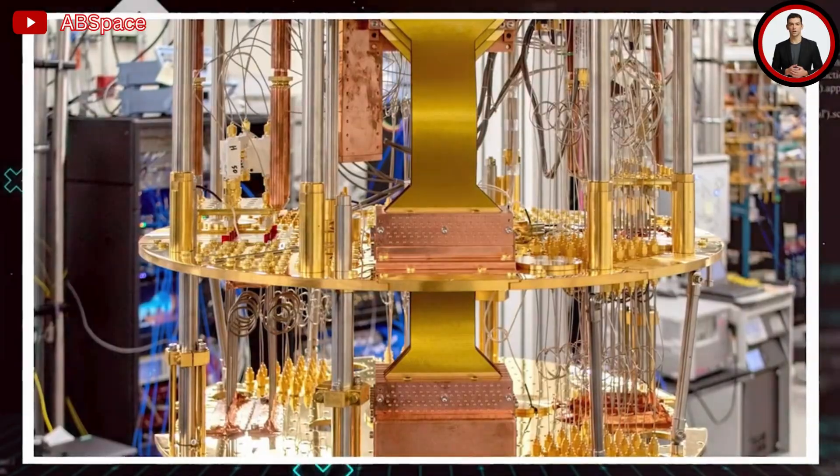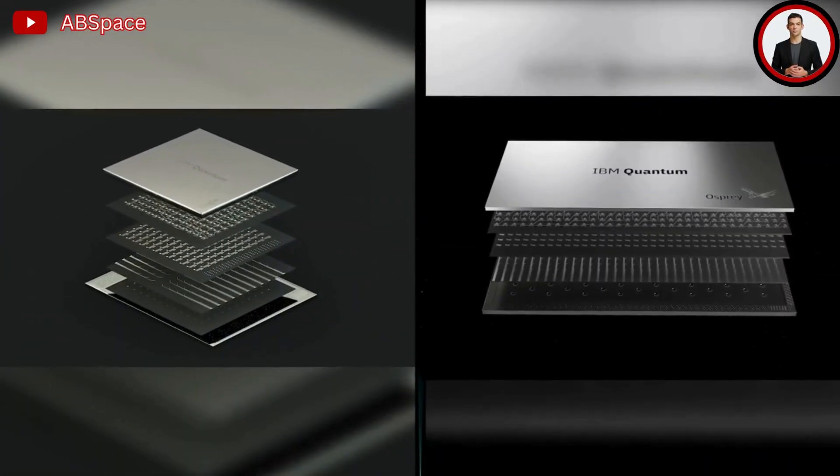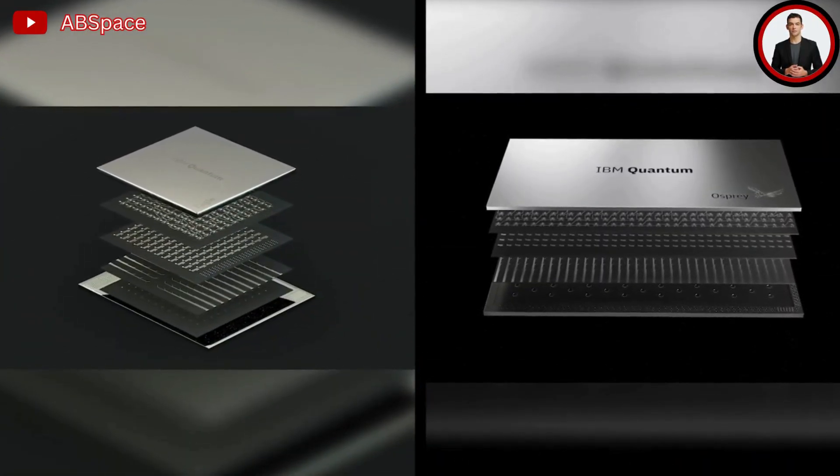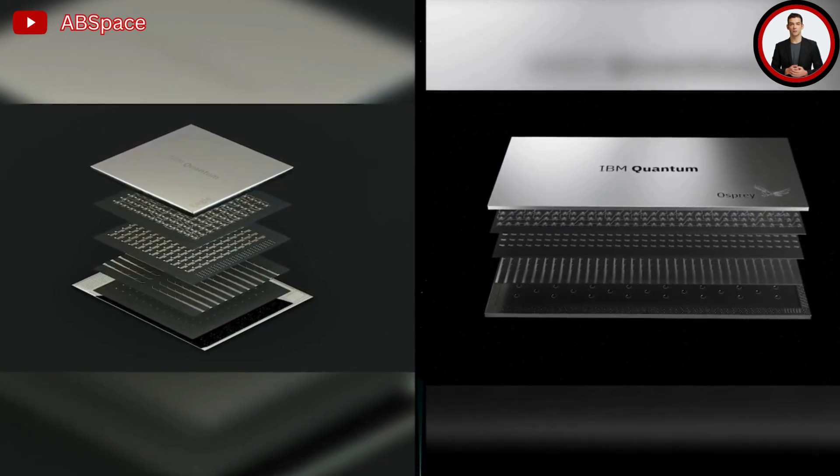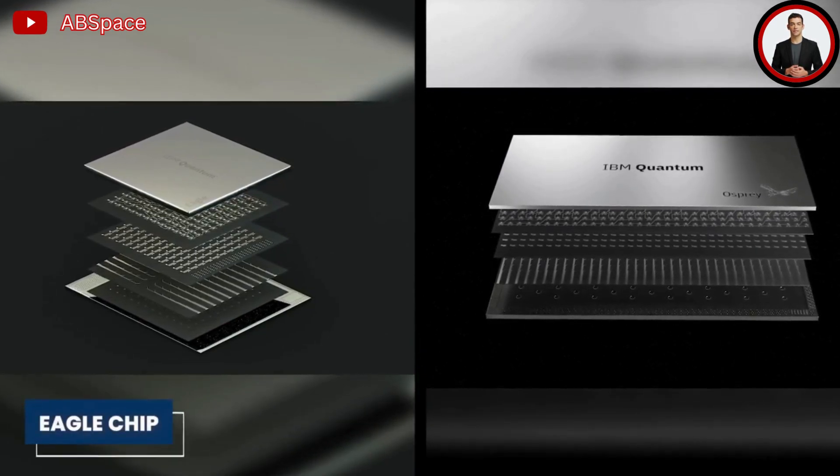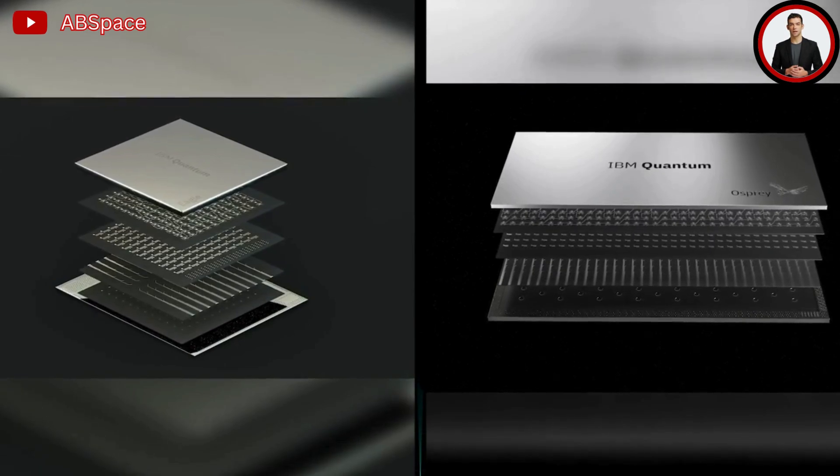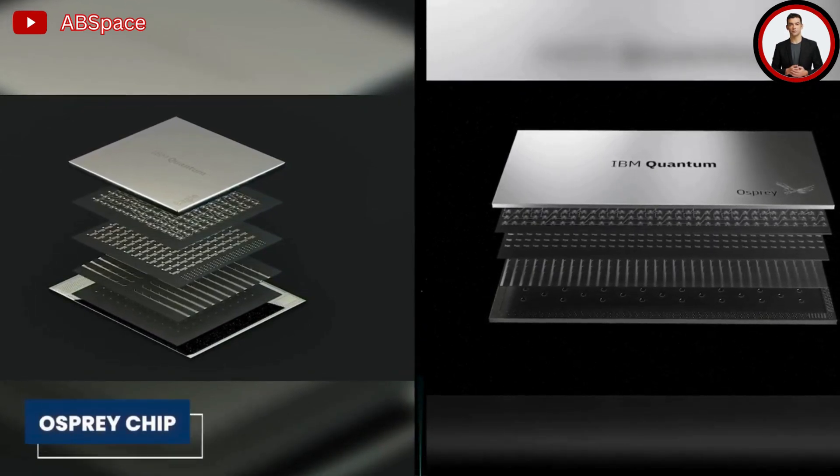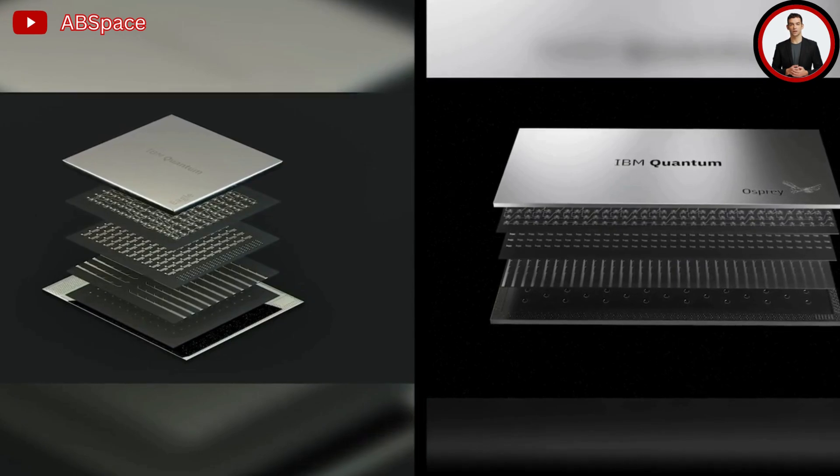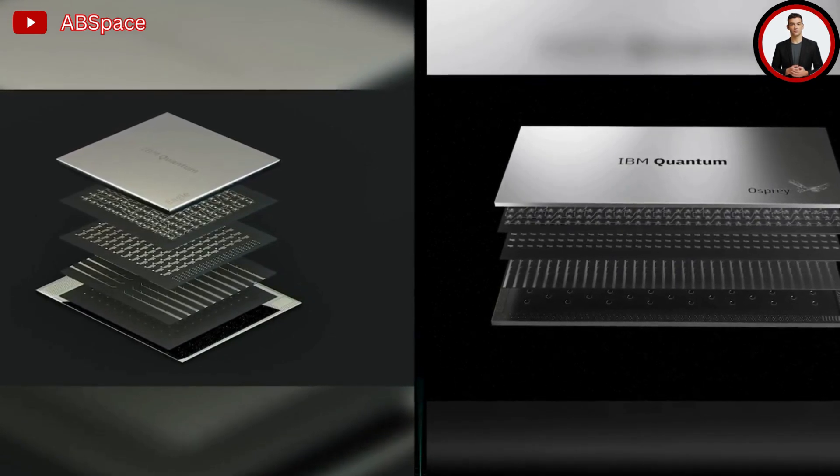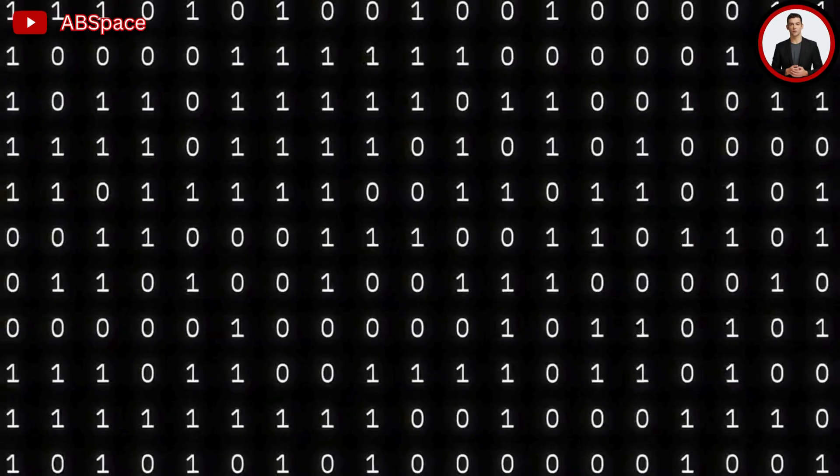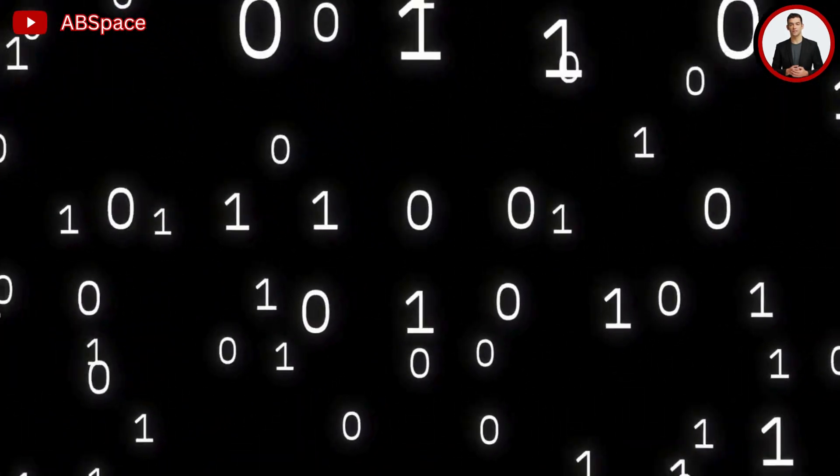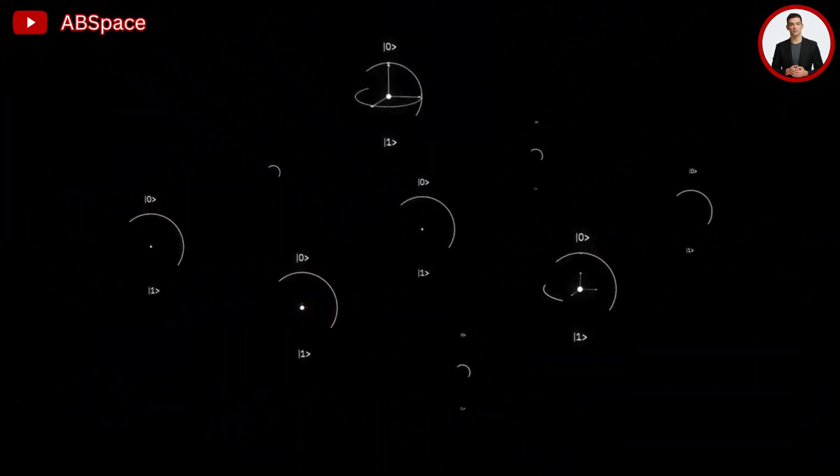This follows in the footsteps of other record-setting computers named after birds that IBM has developed, such as the Eagle chip which has 127 qubits and was unveiled in 2021, and the Osprey chip which has 433 qubits and was announced the previous year. The promise of quantum computers is that they will be able to execute computations currently beyond the capabilities of traditional computers.